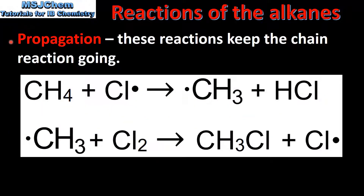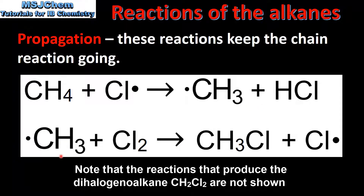The next step in the reaction is propagation. These reactions keep the chain reaction going. In the first reaction, methane CH4 reacts with a chlorine radical to produce a methyl radical and hydrogen chloride. In the second reaction, the methyl radical reacts with molecular chlorine to produce chloromethane and another chlorine radical. The chlorine radical produced can then go on to react with another methane molecule.